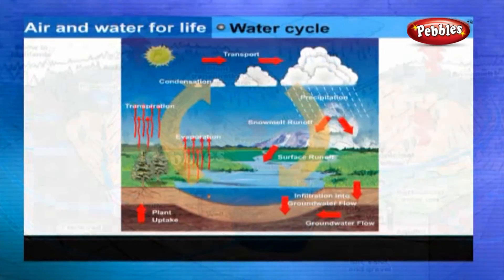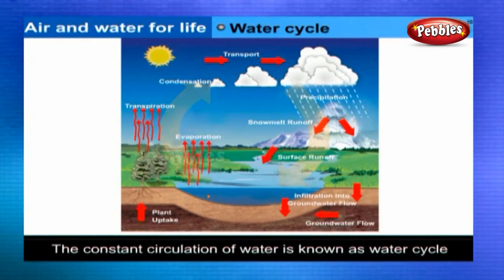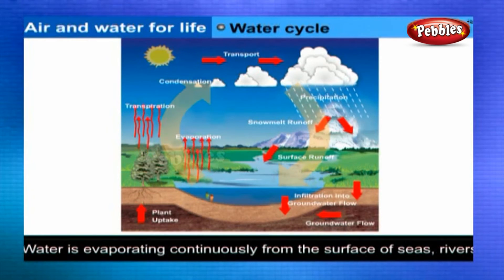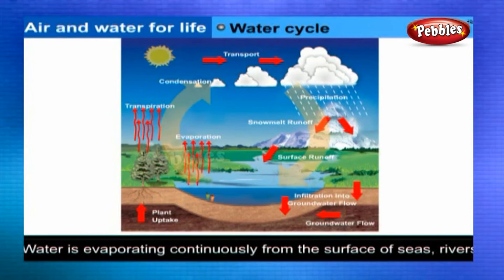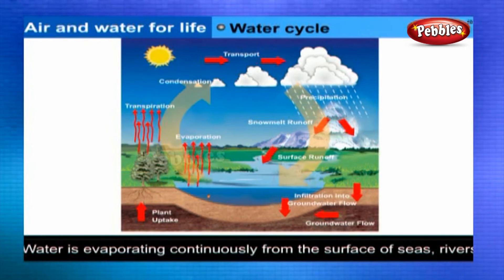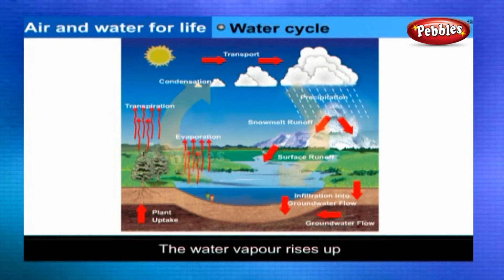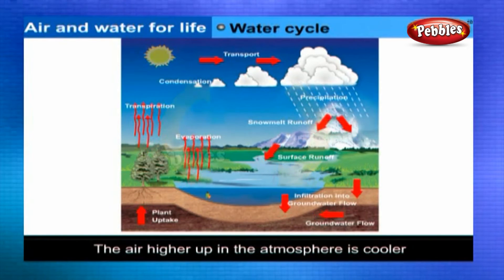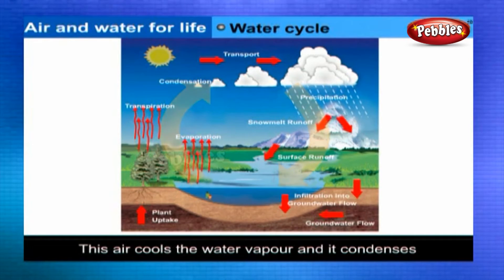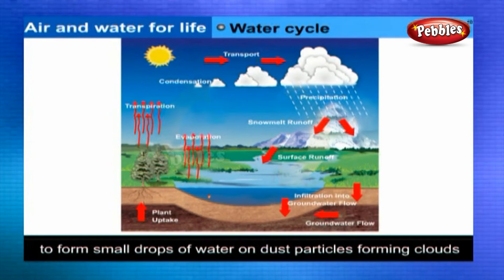Water as a solvent: Gases like oxygen, carbon dioxide, and ammonia are also soluble in water. Since water dissolves almost every common substance in it to some extent, water is considered to be a universal solvent. Solutions made in water are termed aqueous solutions. A solution is a mixture of solute and solvent — the substance which is dissolved to make a solution is the solute.